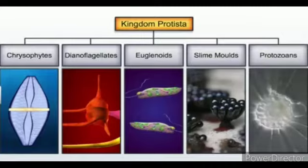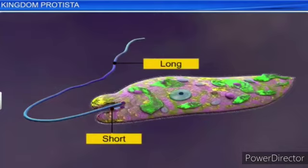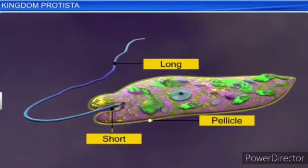The third group is euglenoids. The majority are fresh water organisms found in standing water. Instead of a cell wall, they have a protein-rich layer called pellicle, which makes their body flexible. Euglenoids show animal character because animal cells have a cell membrane; this cell membrane in euglenoids is called pellicle, which is rich in protein. Normally a cell wall is made up of cellulose. They also have two flagella — a short and a long one.